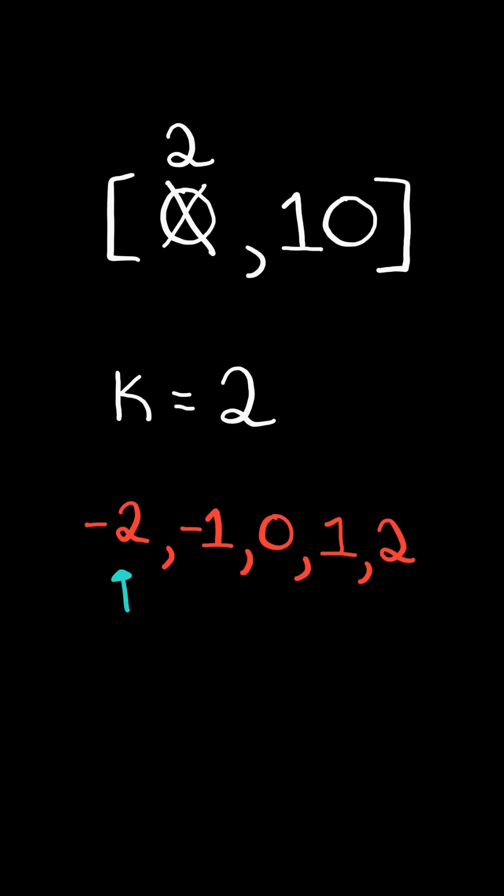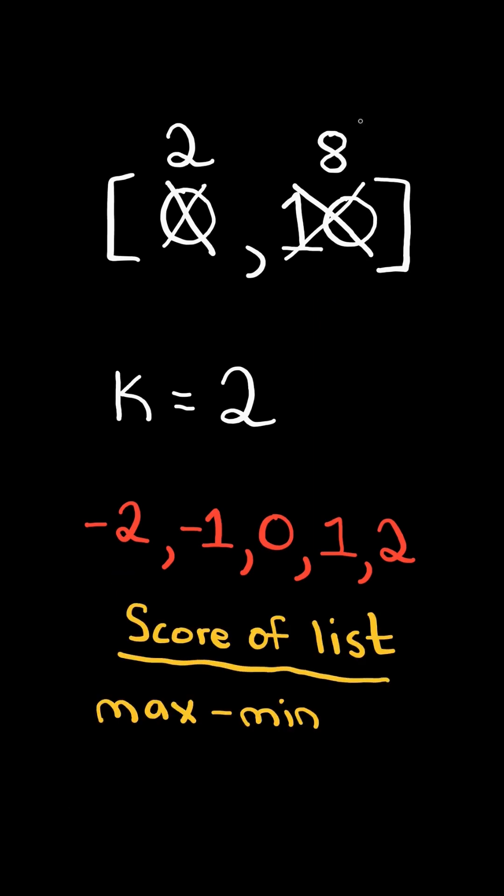Again, we choose any number in the range and add it to a number in the list. The score of the list is defined as the maximum minus the minimum element in the list. We want to return the minimum score possible.